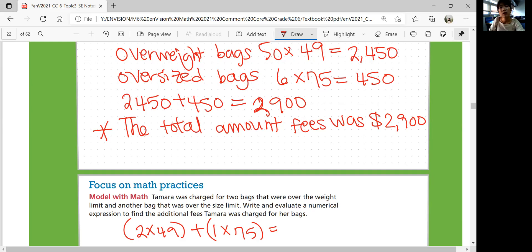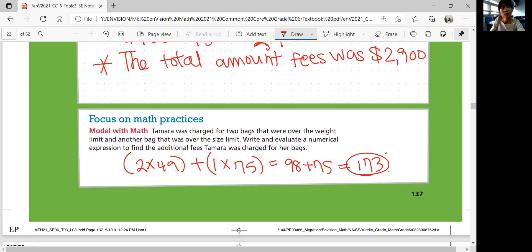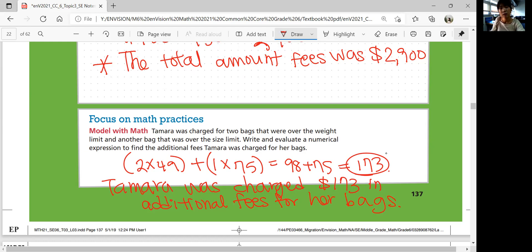And then she has one more bag that's over the size limit, which is $75 each. So in total, $49 times 2 plus 1 times 75 should equal to $98 plus 75 should equal to $173. So what is your final answer? Tamara was charged $173 in additional fees for her bags.